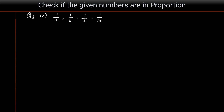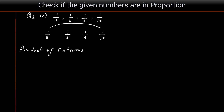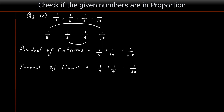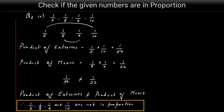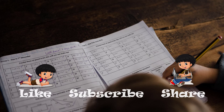Question four: check if 1/5, 1/8, 1/4, and 1/10 are in proportion. All four numbers are fractions but the concept remains the same. Product of extremes: 1/5 × 1/10 = 1/50. Product of means: 1/8 × 1/4 = 1/32. Since 1/50 ≠ 1/32, the product of extremes does not equal product of means. Therefore 1/5, 1/8, 1/4, and 1/10 are not in proportion.